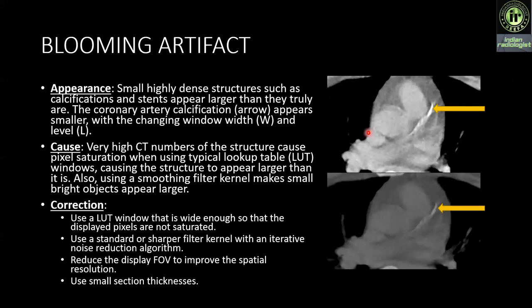Next artifact is blooming artifact. Small highly attenuating structures such as calcifications and stents appear larger than they truly are. Cause: very high CT numbers of the structure cause pixel saturation when using typical lookup table windows, causing the structure to appear larger than it is. Also, using a smoothing filter kernel makes smaller bright objects appear larger. Correction: use a lookup window table wide enough so displayed pixels are not saturated, use a standard or sharper filter kernel with an iterative noise reduction algorithm, reduce the display FOV to improve spatial resolution, and use a small section thickness.